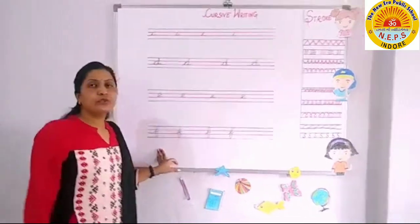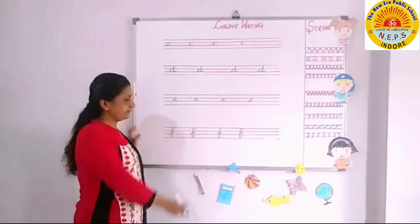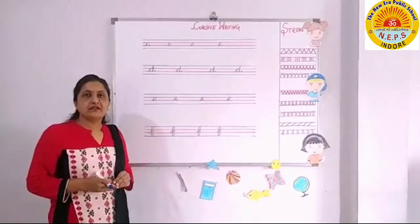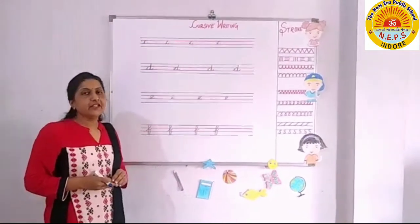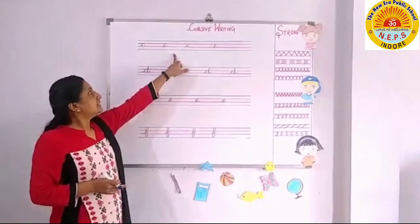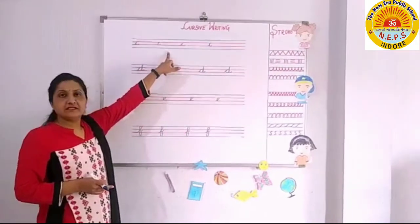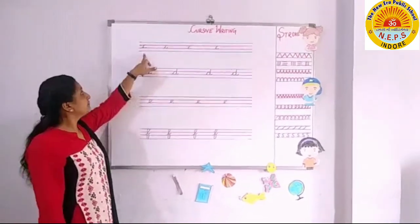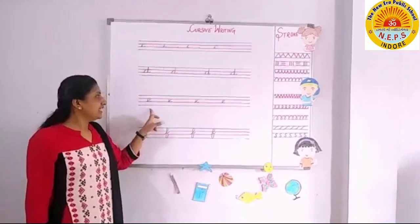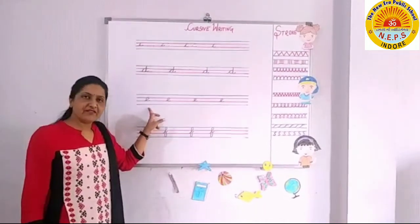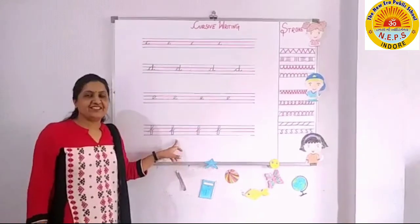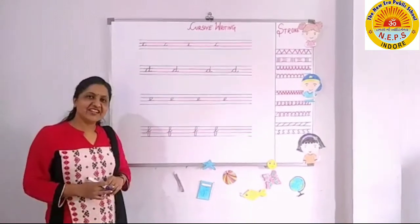So, you have to do more practice in your copy. C — seeker cat. D — the dog. E — elephant. F — fish. Okay friends, all right.